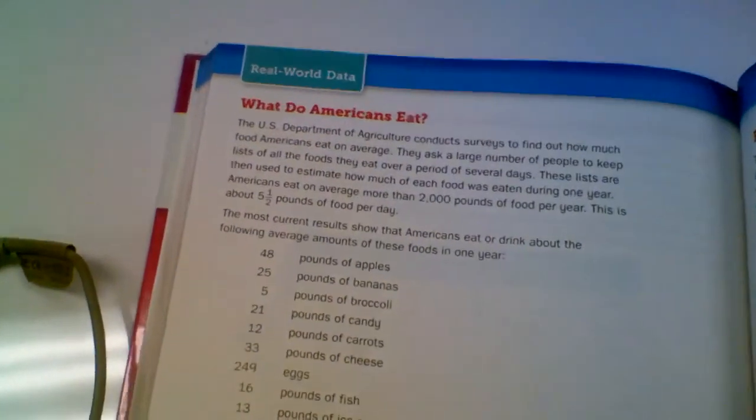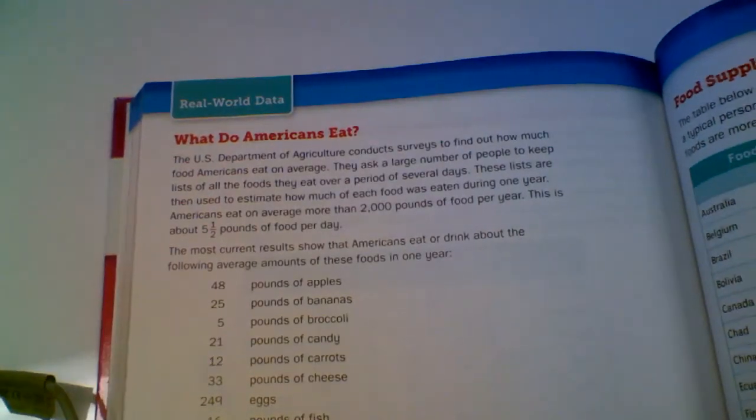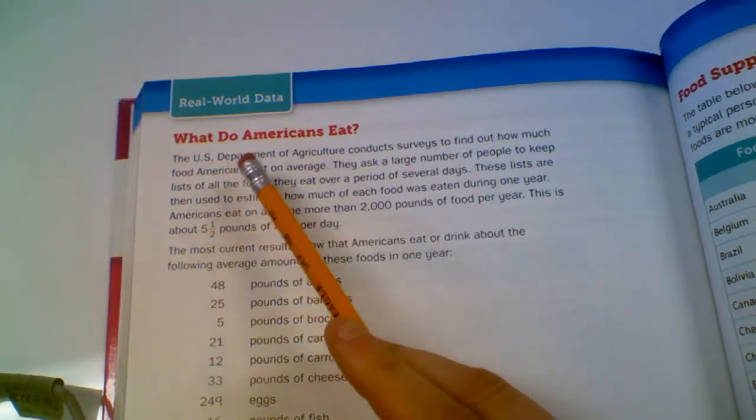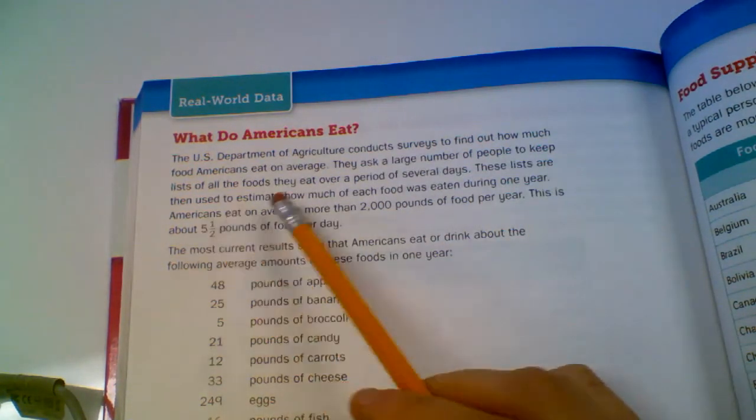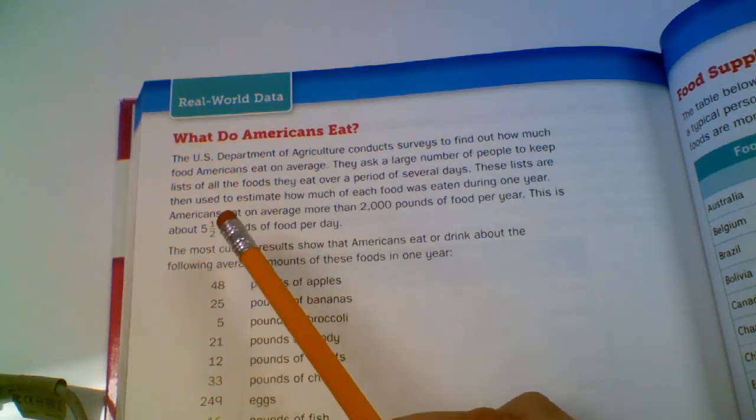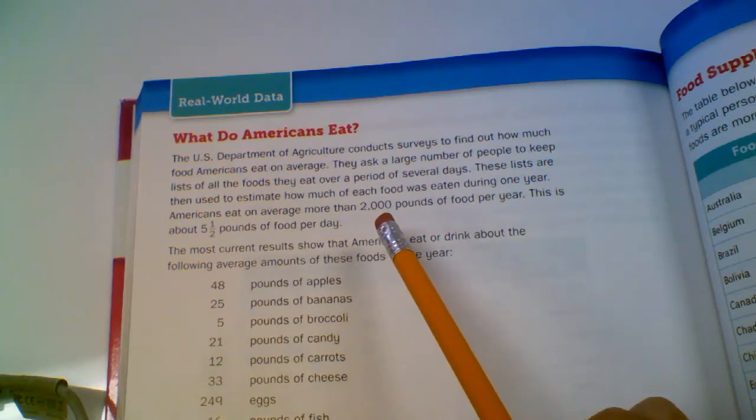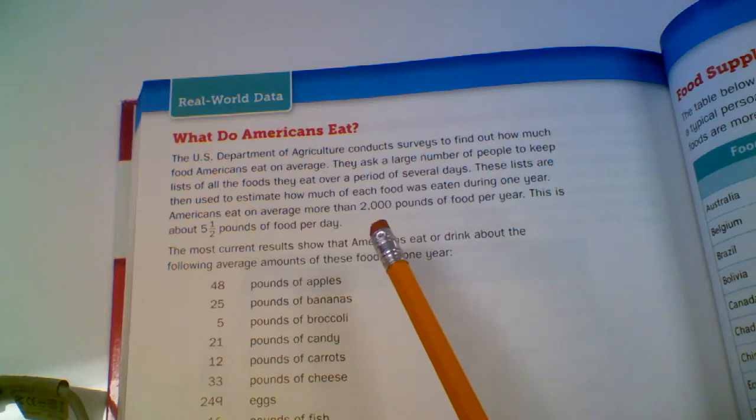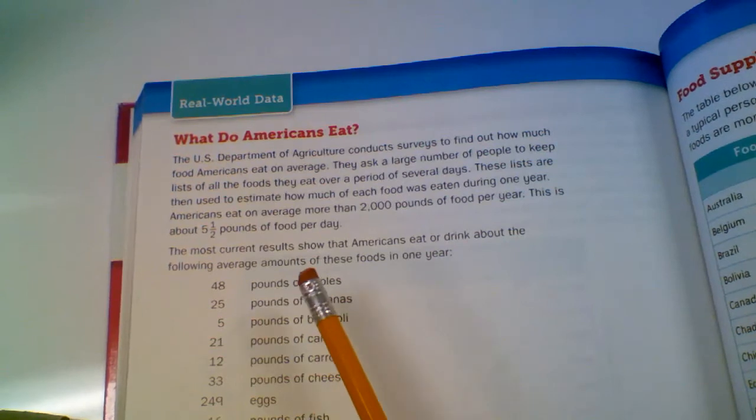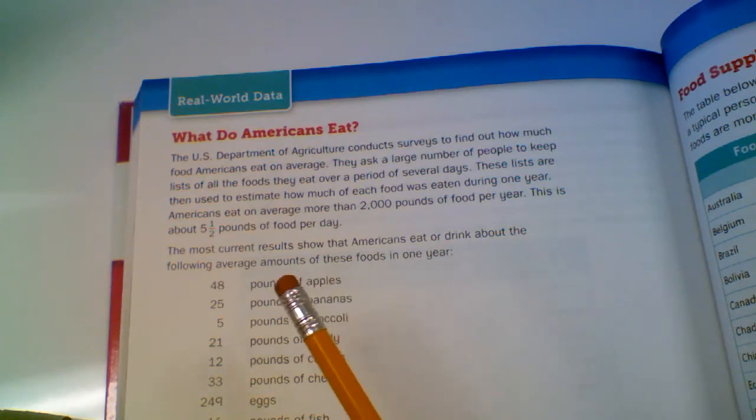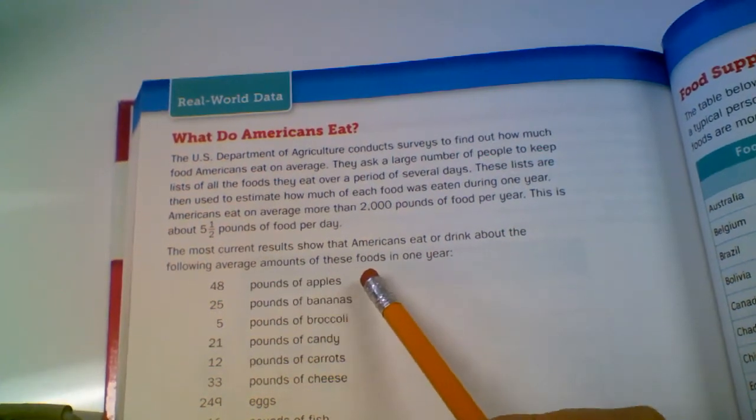They've got pictures of food on the bottom. So these are facts, it says real world data. What do Americans eat? The U.S. Department of Agriculture conducts surveys to find out how much food Americans eat on average. They ask a large number of people to keep lists of all the foods they eat over a period of several days. These lists are then used to estimate how much of each food was eaten during one year.